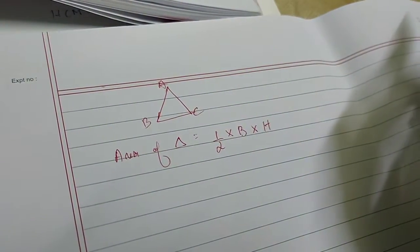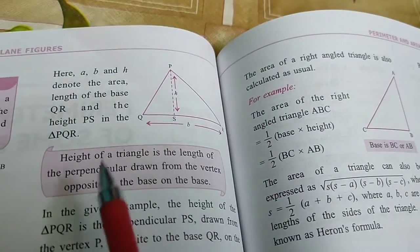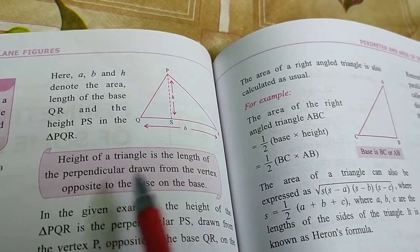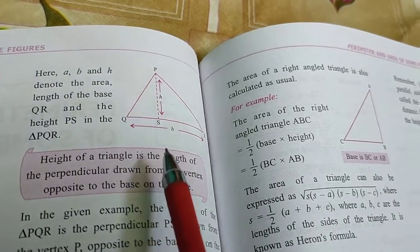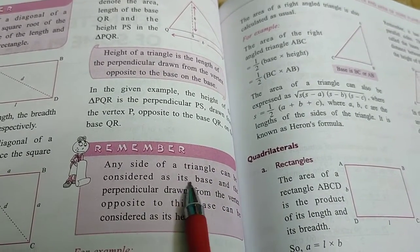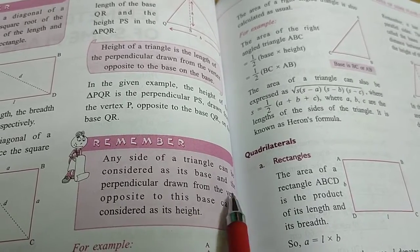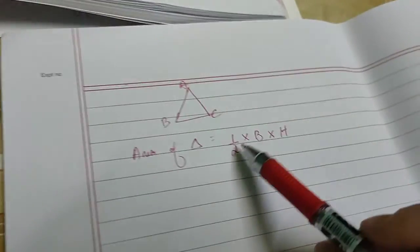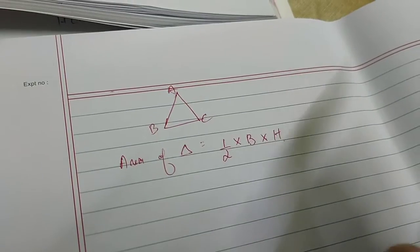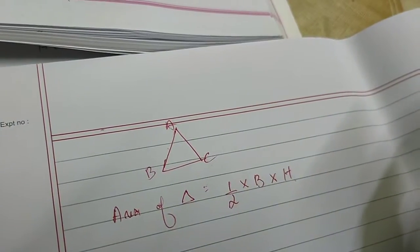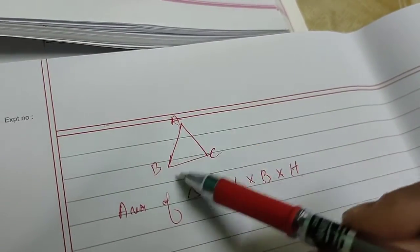Now you have to identify which is the base and which one is the height. The height of the triangle is the length of a perpendicular drawn from the vertex opposite to the base, on the base. Any side of a triangle can be considered as its base — it can be AC, AB, or BC.